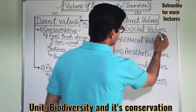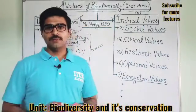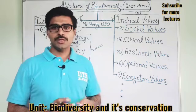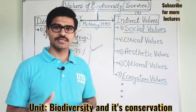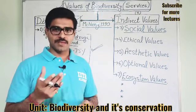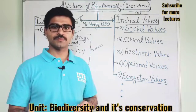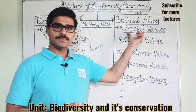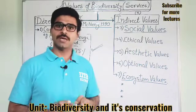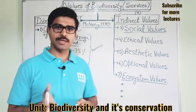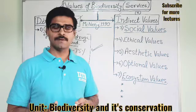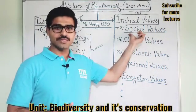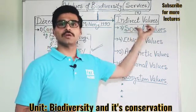First is social values. Social values means the values which are based on social society, culture, religions, and beliefs. For example, the mango tree — there are so many holy plants like tulsi and mango which get worshiped by us on a daily basis. So this is the example of social values.